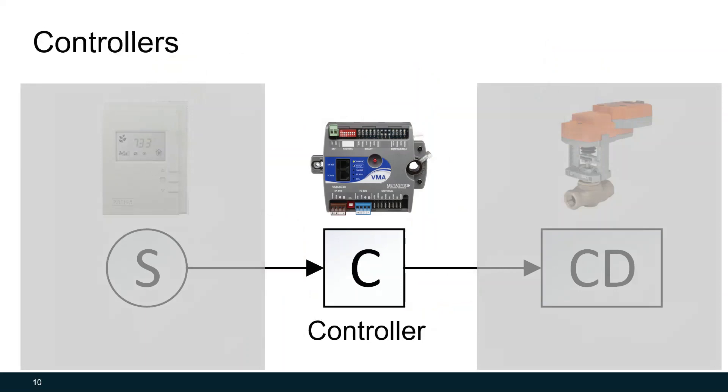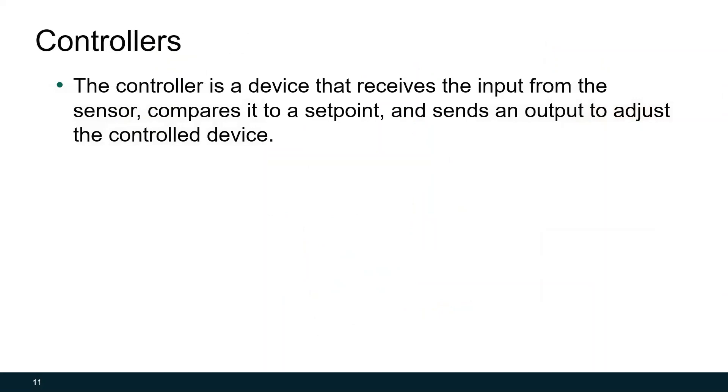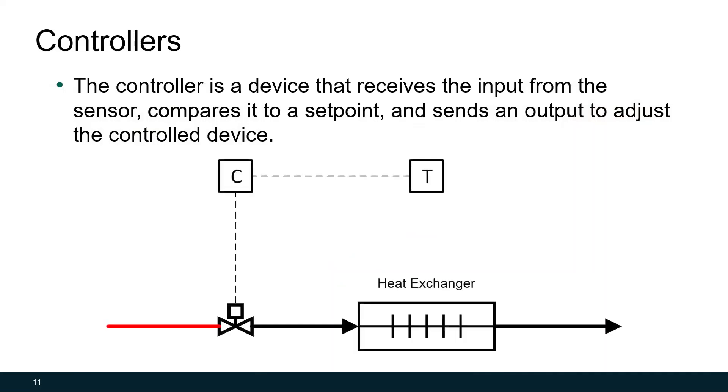So those input signals from the sensor are sent to the controller. What is a controller? The controller is just a device that receives the input from the sensor, compares it to a set point, and sends an output to adjust the control device. Let's go through an example to see how this works. Here we have a room that's being heated by a hot water heat exchanger. The temperature sensor, the input device, detects the space is at 68 degrees and sends that signal to the controller. The controller then compares it to its set point. Its current set point is 70 degrees. We're trying to maintain the space at 70 degrees. The controller detects that there's a difference between the input signal and the set point. And because it detects a difference, it sends an output signal to the hot water valve, the control device, to open. The control device will then open and then we can start heating the space.